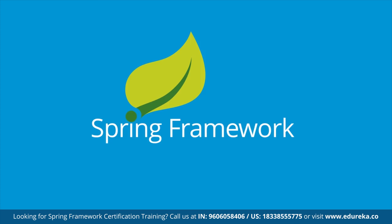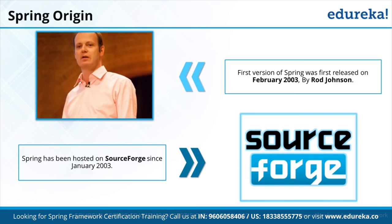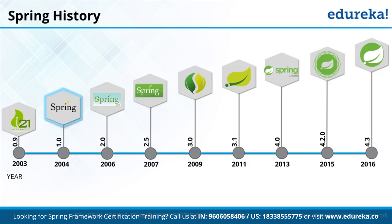What is Spring Framework and what are its key features? Spring has been available on SourceForge since January 2003. It's an open-source project introduced by Rod Johnson. The first version was released in February 2003. Spring is available as an open-source community project — you can browse spring.org for APIs, documentation, and learning resources. The most widely used version is 4.3, released in 2016.